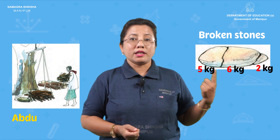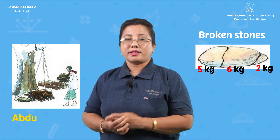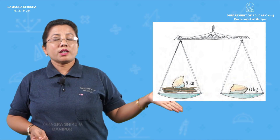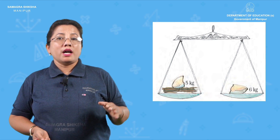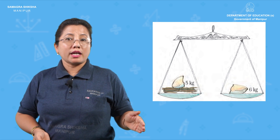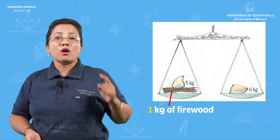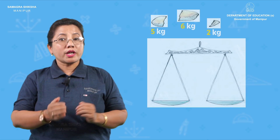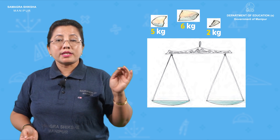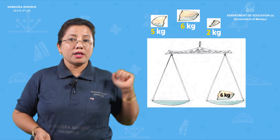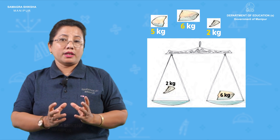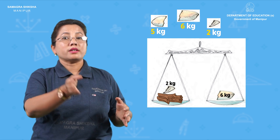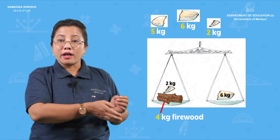If we have 1 kg, we need to make balance for 1 kg. If we put 5 kg in the balance, we need to make balance for 5 kg. If you put 6 kg in the balance — 5 plus 1 is equal to 6 kg. What weight is 4 kg? Four plus two equals six.